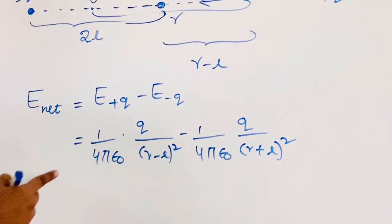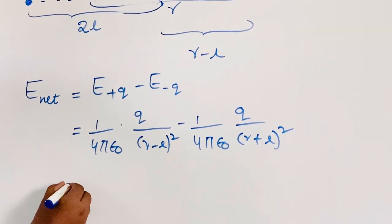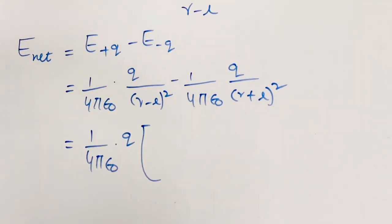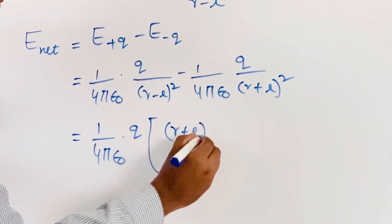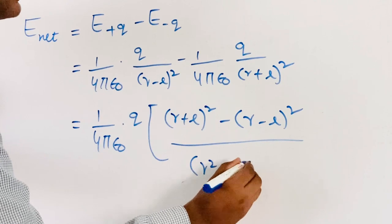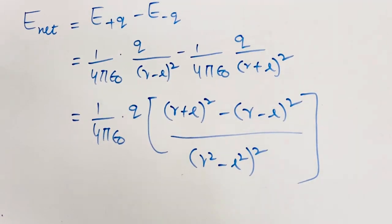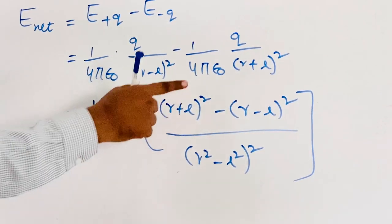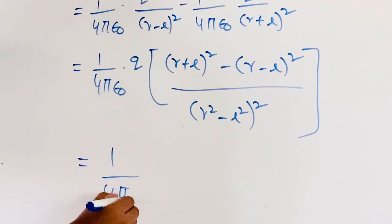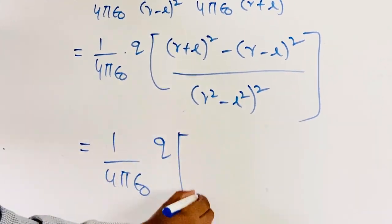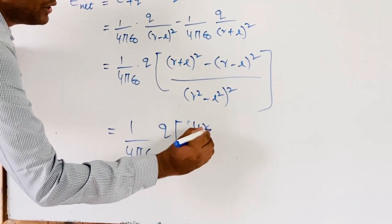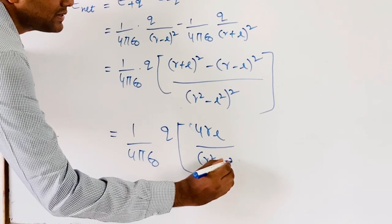Now in the numerator we can see the algebraic identity A plus B whole square minus A minus B whole square. Applying this identity, the numerator becomes 4RL, so the expression simplifies to 1 by 4 pi epsilon 0 into Q into 4RL divided by (R square minus L square) whole square.